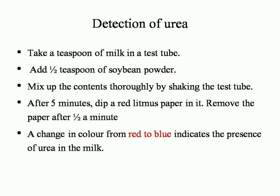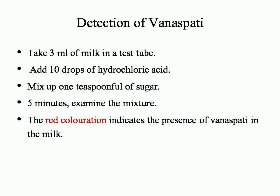Procedure summary: add a teaspoon of milk and half teaspoon of soybean powder to a test tube. Add red litmus paper. Add a teaspoon of hydrochloric acid and mix with 1 teaspoon of sugar, wait 5 minutes, then examine. Red coloration indicates the presence of vanaspathi in the milk.